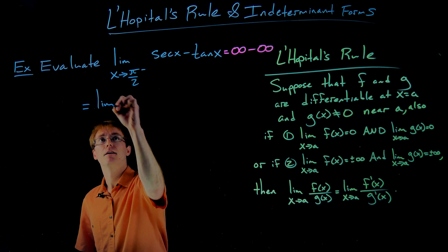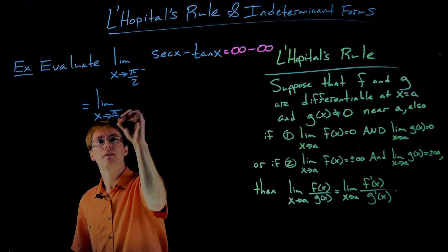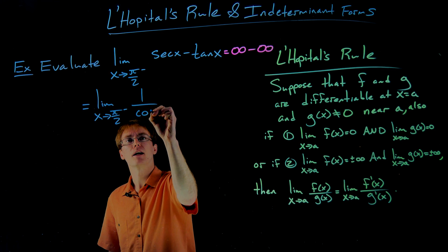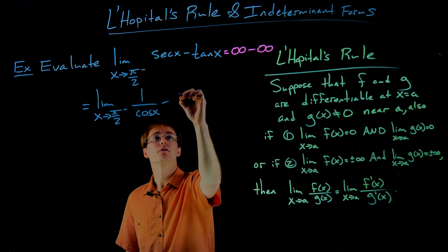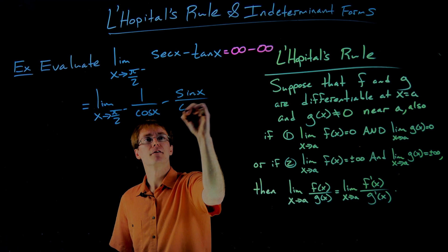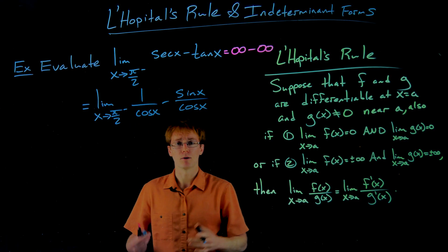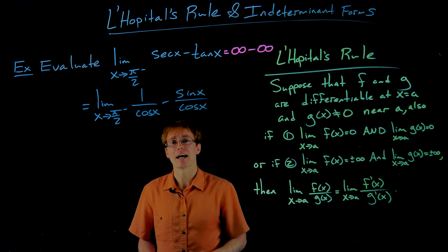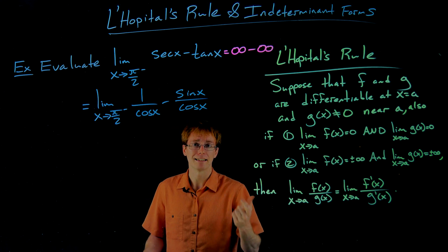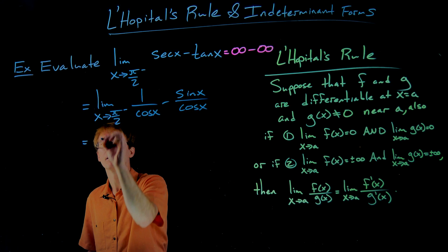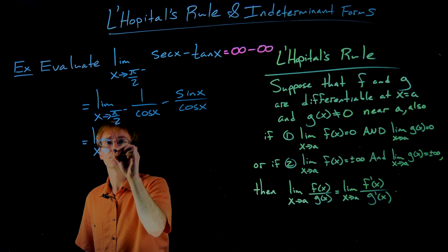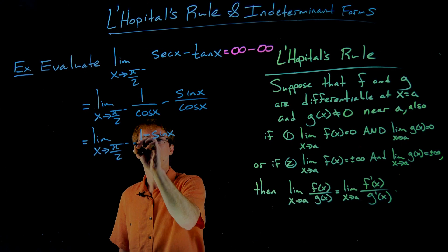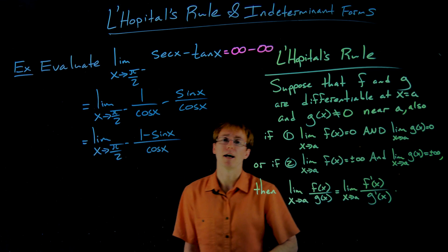The key is to observe that we can rewrite these functions: secant of x is equivalent to 1 over cosine of x, and tangent of x is equivalent to sine of x over cosine of x. Writing them in this alternative form, we can combine them with a common denominator into a single fraction, giving us the potential for an indeterminate quotient. This becomes the limit as x approaches π/2 from the left of (1 minus sine of x) all over cosine of x.